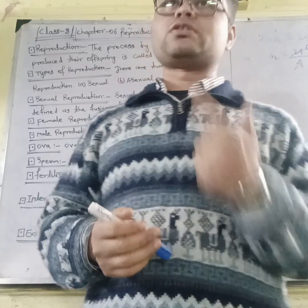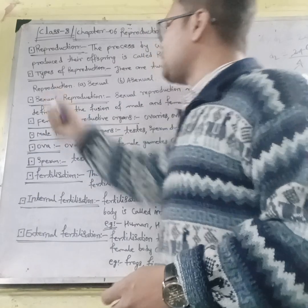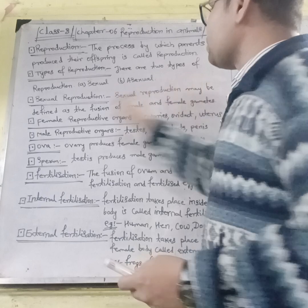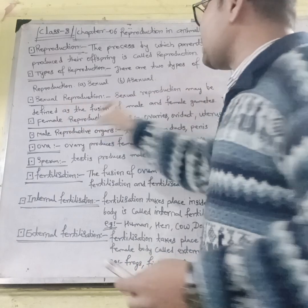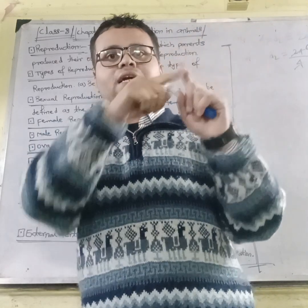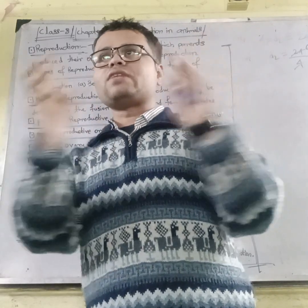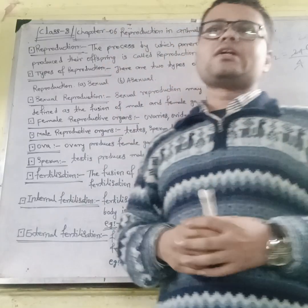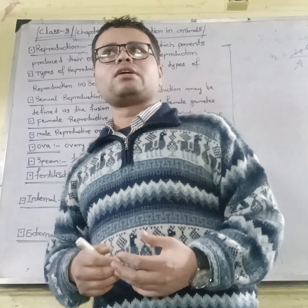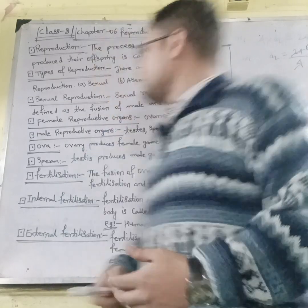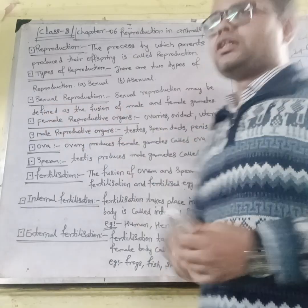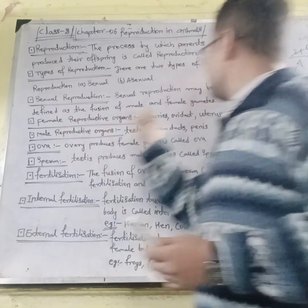What do you mean by sexual reproduction? Sexual reproduction involves the fusion of male and female gametes. When the male gamete combines with the female gamete, it is known as sexual reproduction. Now, what do you mean by the female reproductive organs? Ovaries and uterus are examples of female reproductive organs.